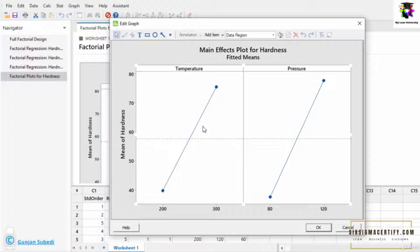One important concept to understand is as the graph goes steeper and steeper, the effects of the factor on the main effects of the hardness also increases. For example, the line of pressure is steeper than the line of temperature here. So the change in pressure has more effect on the hardness of the plastic than the change in temperature itself.